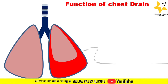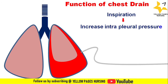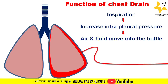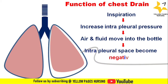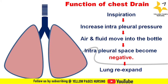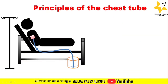After the insertion of a chest tube, following inspiration there is an increase in intrapleural pressure. The normal intrapleural pressure is negative. If air or fluid enters the pleural space, the intrapleural pressure becomes positive. This pressure makes the air and fluid move into the drainage bottle, because the intrapleural pressure is greater than plus two centimeters of water. Once the air and fluid move into the drainage, the intrapleural space becomes negative again and the lungs can expand to normal.